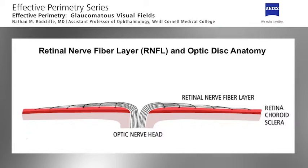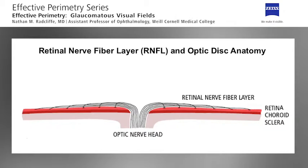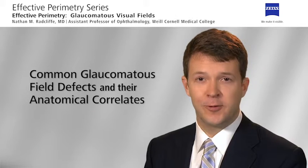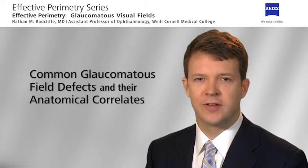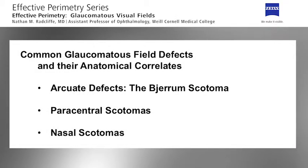Also note that the axons are systematically layered so that longer ones originating far from the disc are situated deeper in the retina and more peripherally in the optic disc. Now we're ready to move on to common glaucomatous field defects and their anatomical correlates. These types of field defects include arcuate defects or what is called a Bjerrum scotoma, paracentral scotomas, and nasal steps.